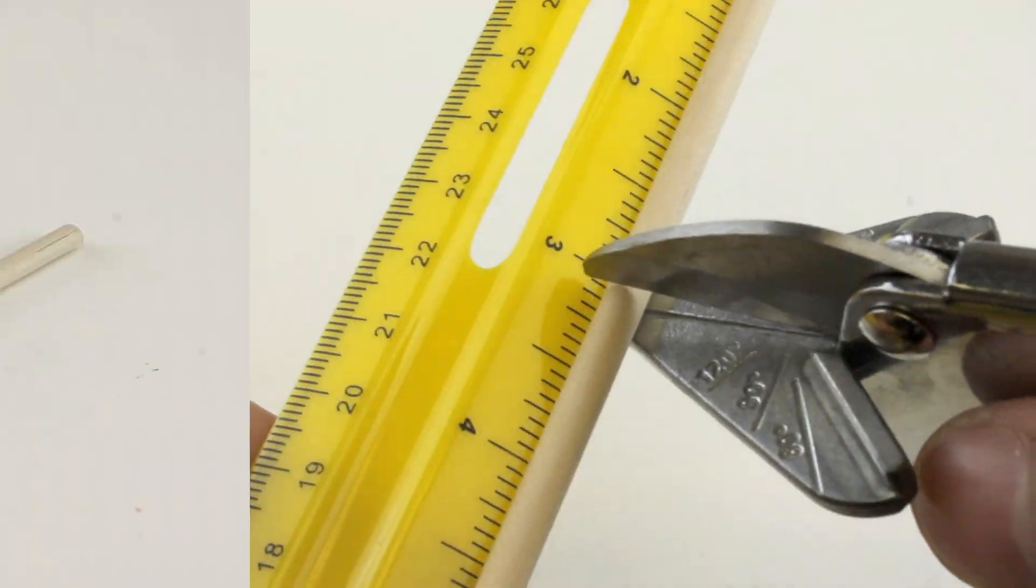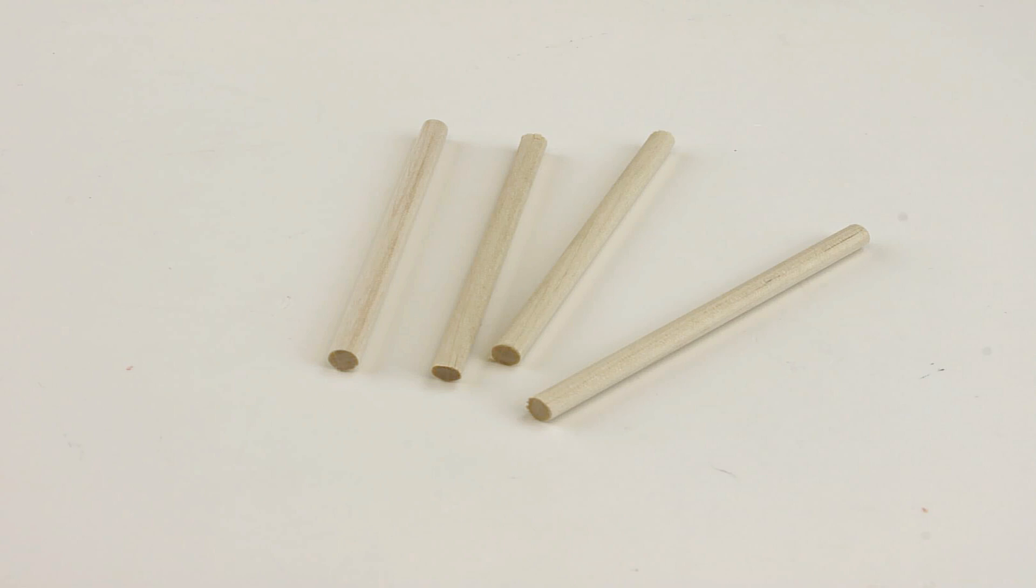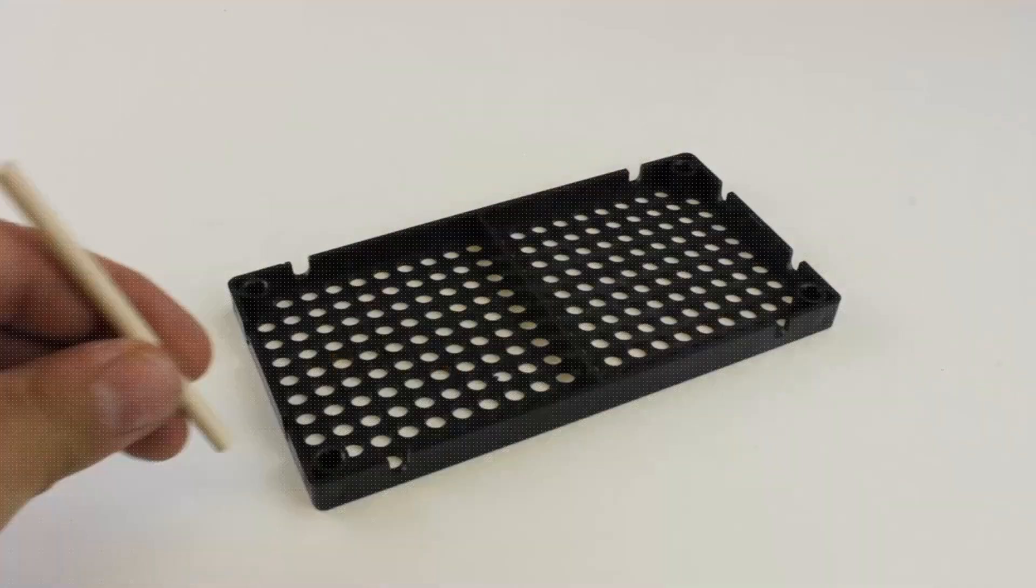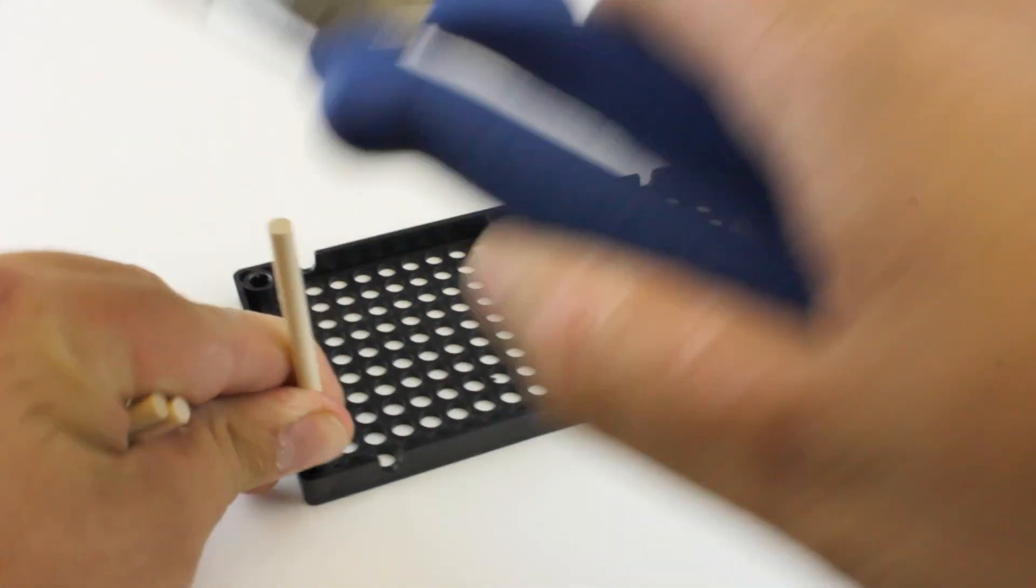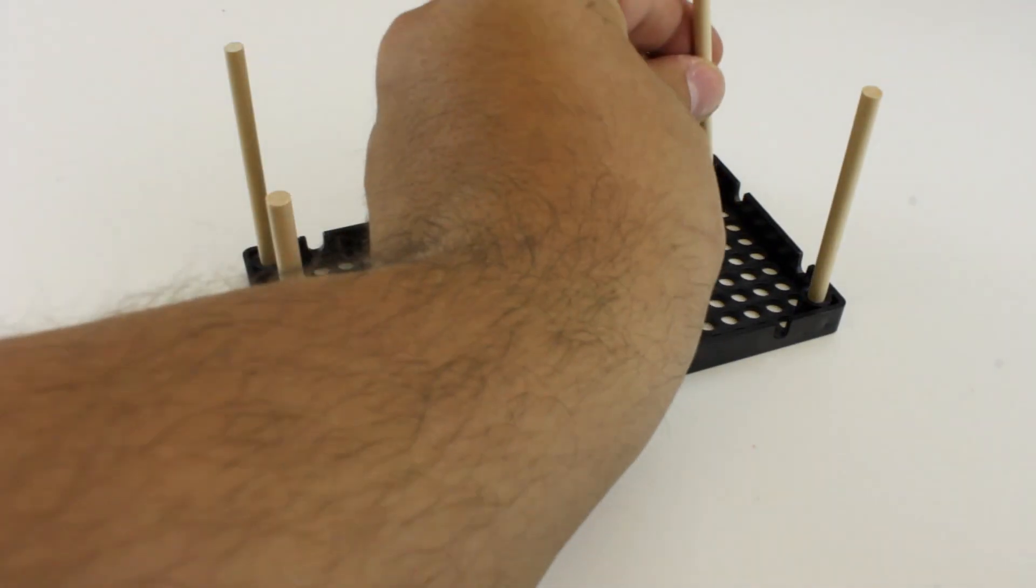For your first step you're going to need to cut four dowels to 75mm, which is about three inches. Then place the four dowels near the corner holes of your hole plate. The easiest way is to tap them in with a pair of easy cutters, but you can also push them in.